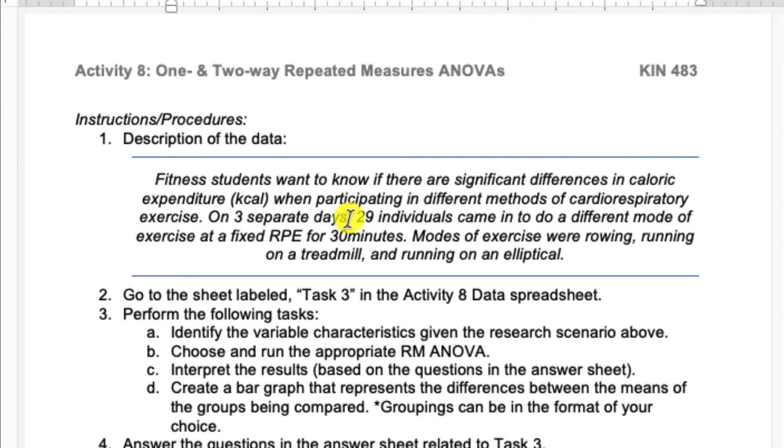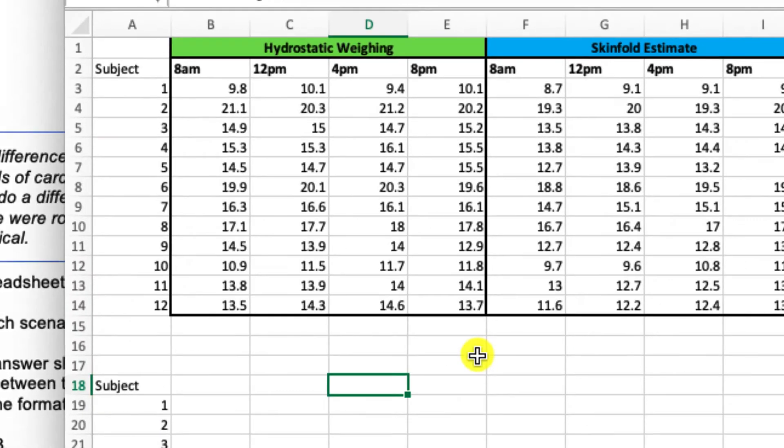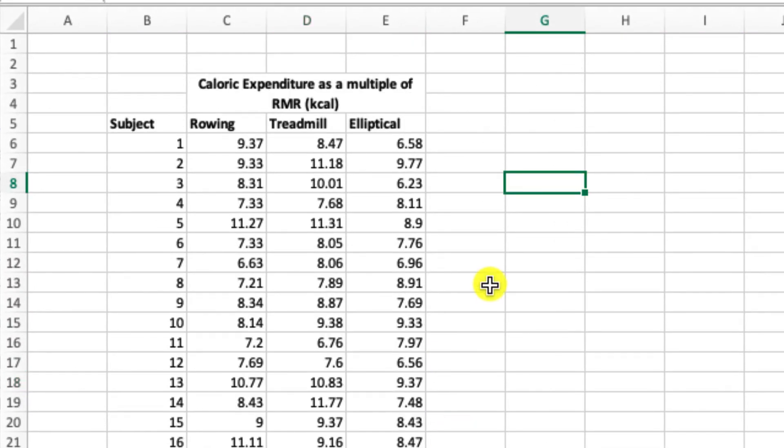So on three separate days, we have 29 individuals come in to do a different mode of exercise, and the modes of exercise were rowing, running on a treadmill, and then running on an elliptical. So you have an idea of what the data look like. These values in the spreadsheet represent the caloric expenditure in kilocalories, and then each of these columns represent a different method that was tested.